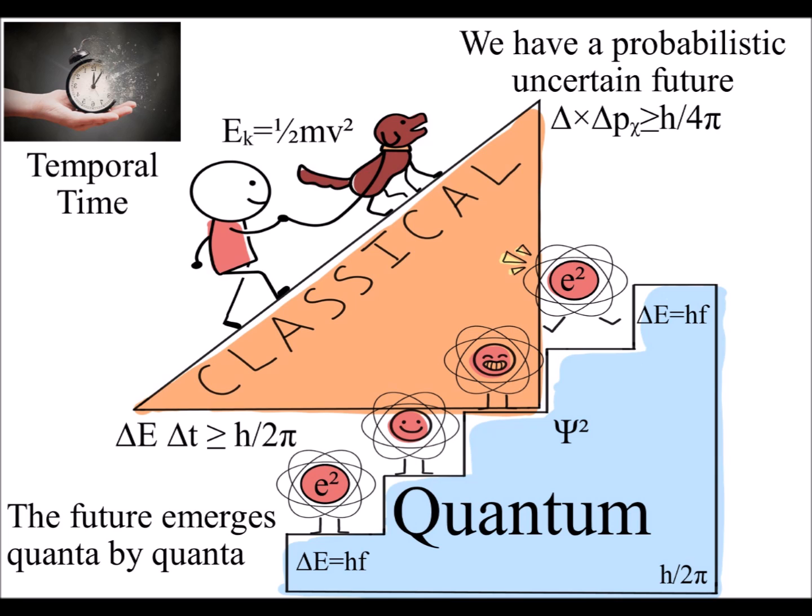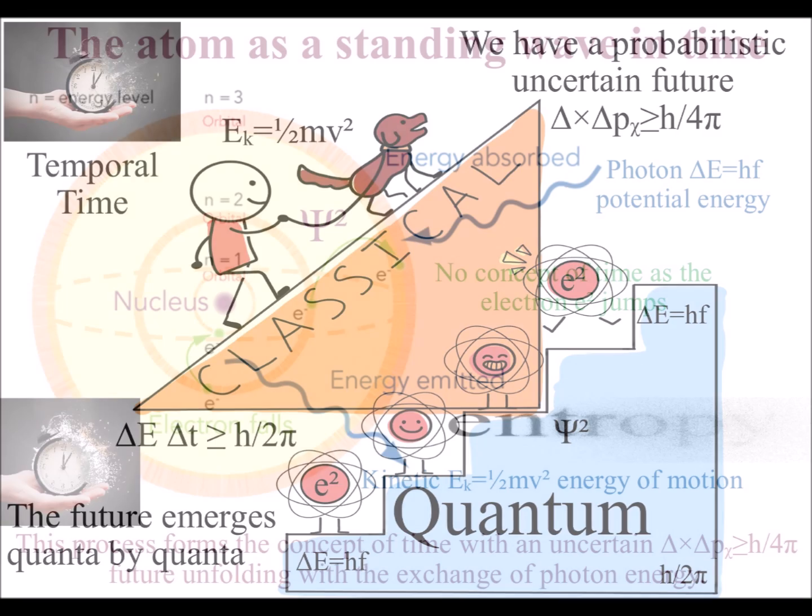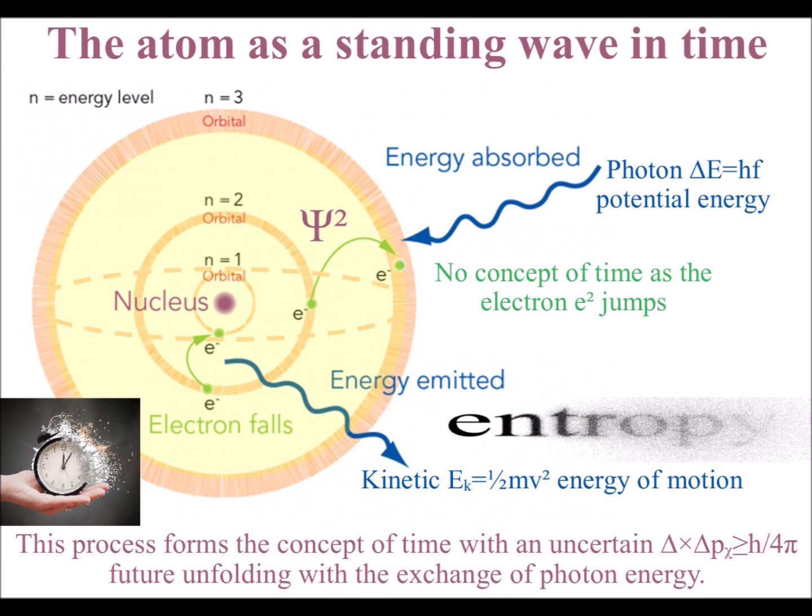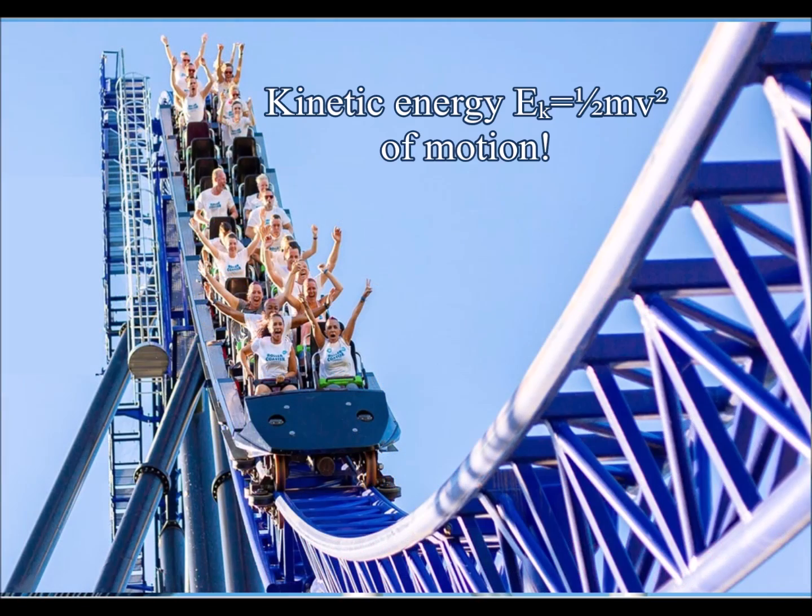We have a probabilistic uncertain future unfolding with the exchange of photon energy, transforming potential energy into the kinetic energy of electrons. As potential energy is transformed into the kinetic energy of motion, our classical everyday world changes.